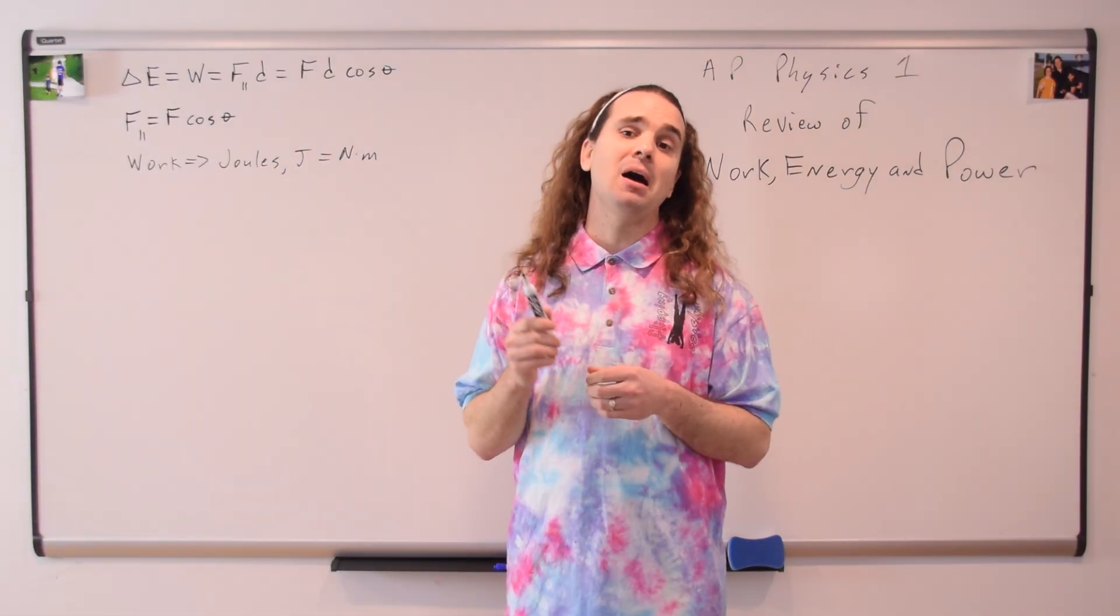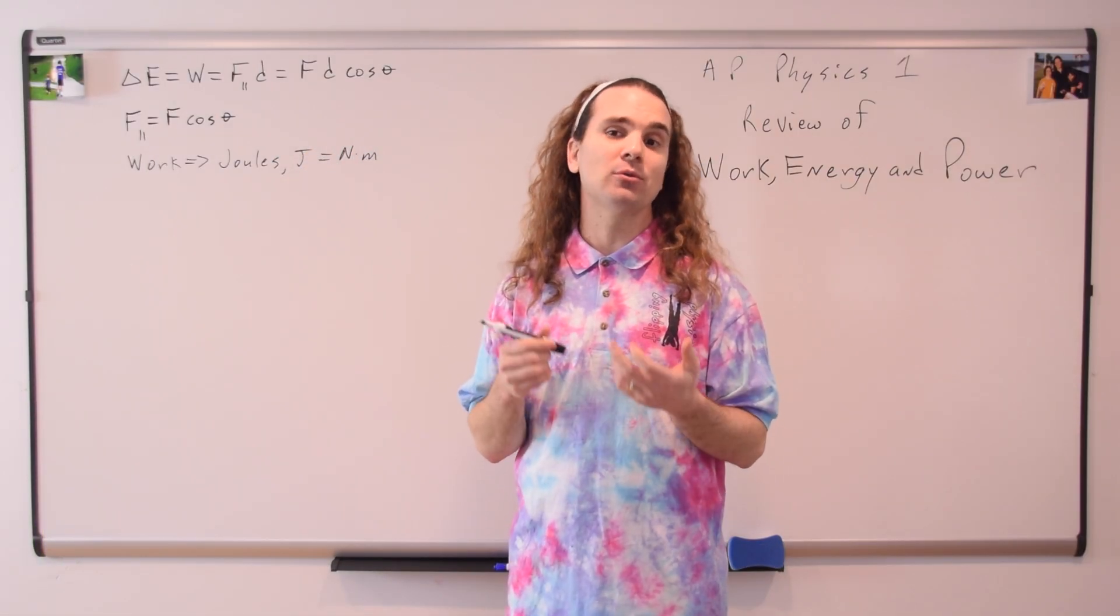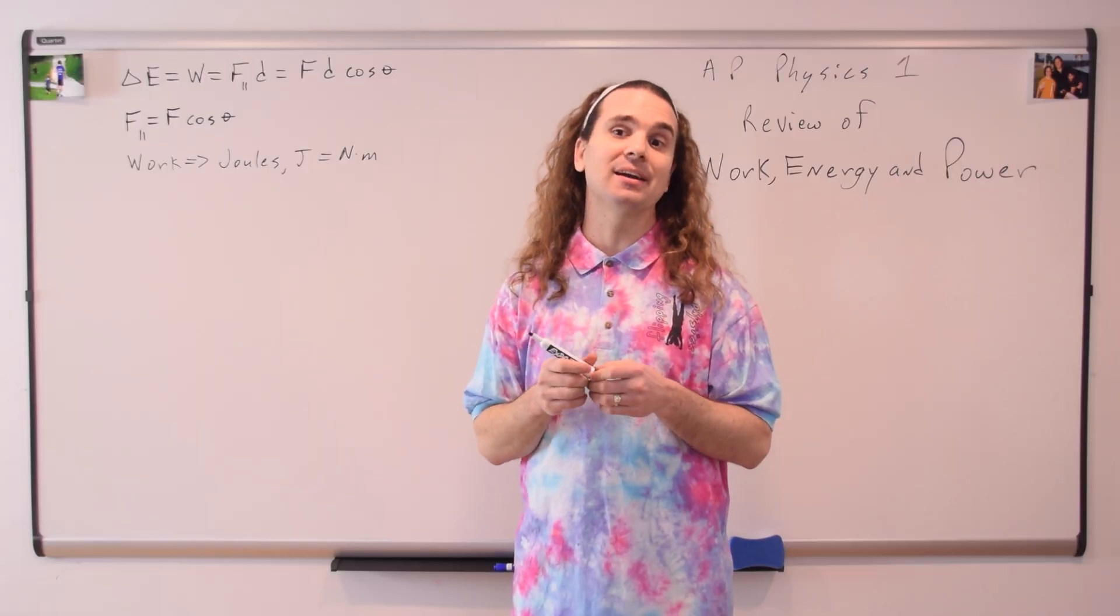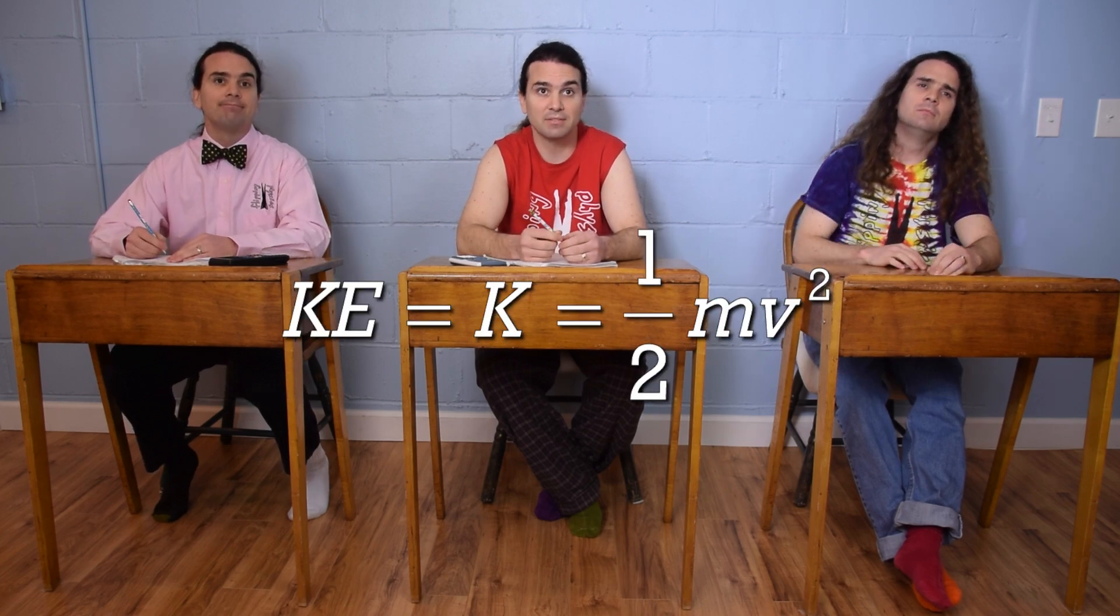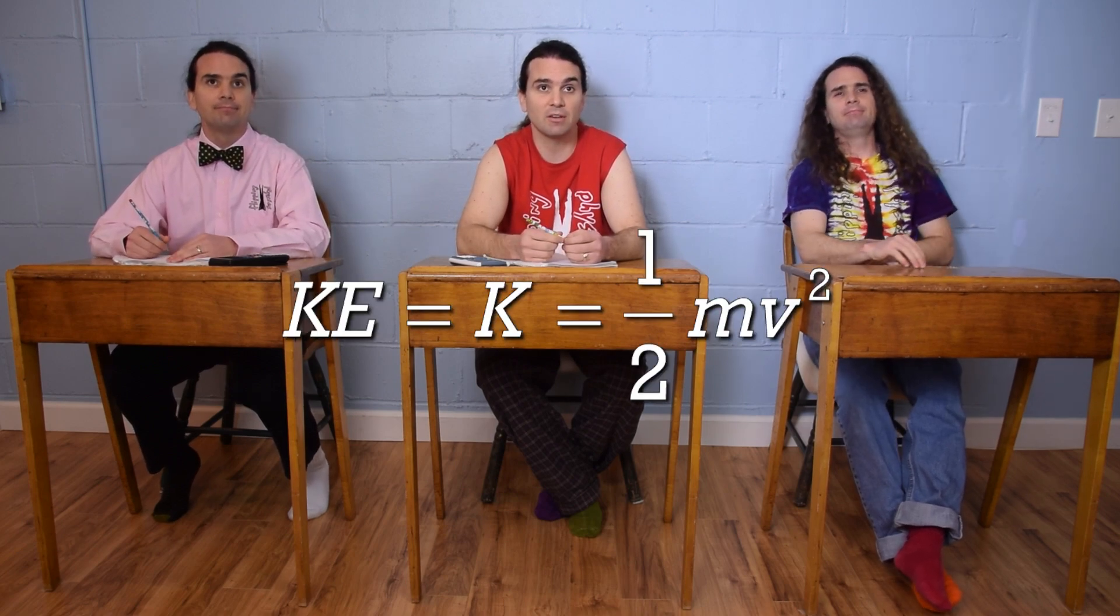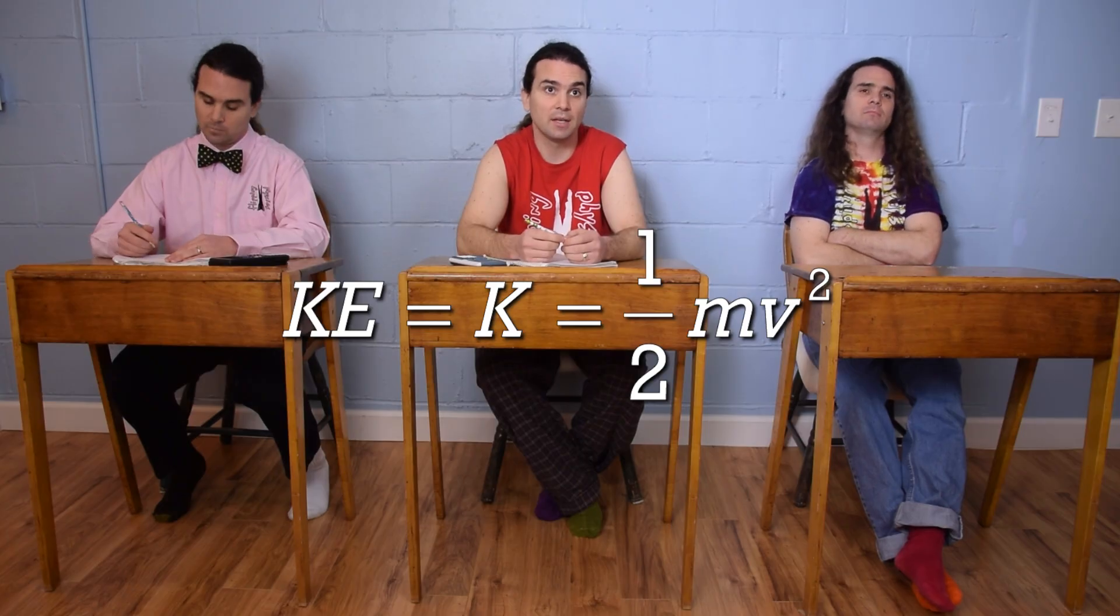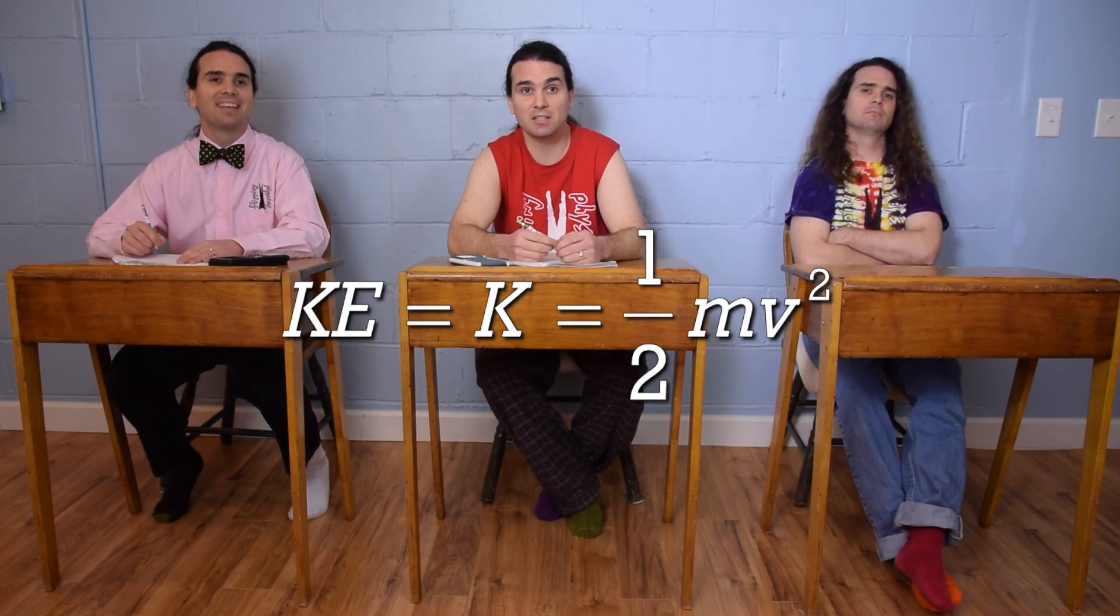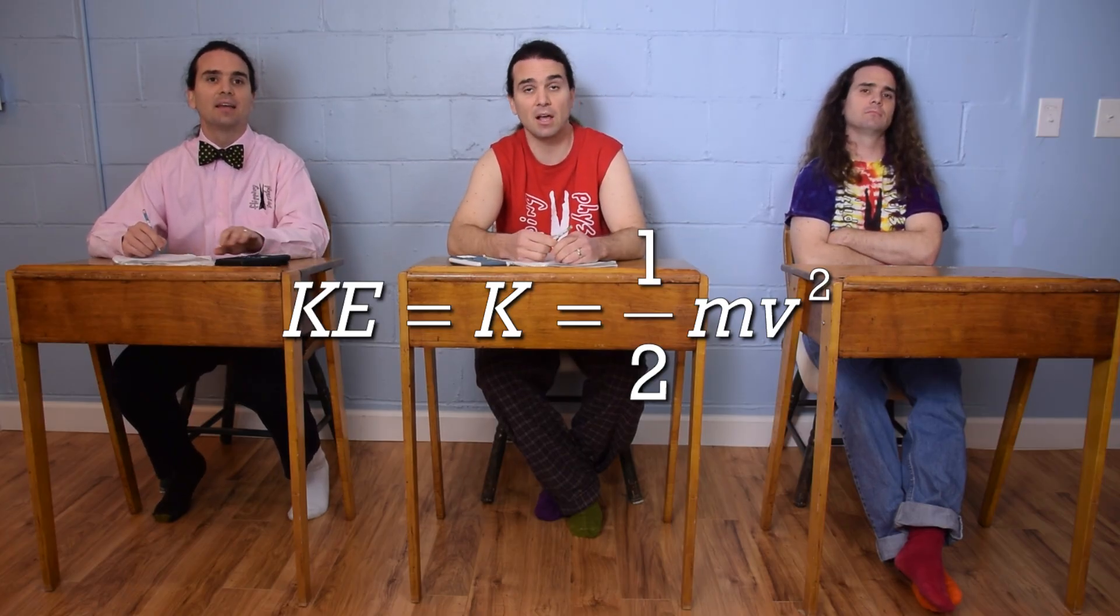Bobby, please tell me everything you know about one of our three types of mechanical energy. Kinetic energy is the energy of motion. The equation is kinetic energy equals one half times the mass of the object times the velocity of the object squared. And kinetic energy will never be negative because mass can't be negative and the velocity is squared.